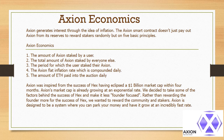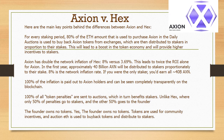Axion is designed to be a system where you can park your money and have it grow at an incredibly fast rate. Here are the main key differences between Axion and HEX. For every staking period, 80% of the ETH used to purchase Axion in the daily auctions is used to buy back Axion tokens from exchanges, which are then distributed to stakers in proportion to their stakes. This will lead to a boost in the token economy and will provide higher incentives to stakers.